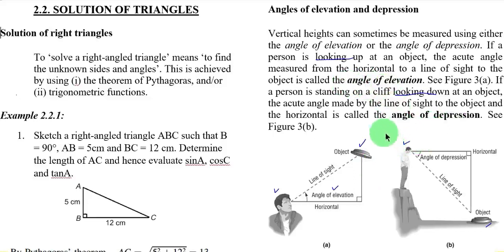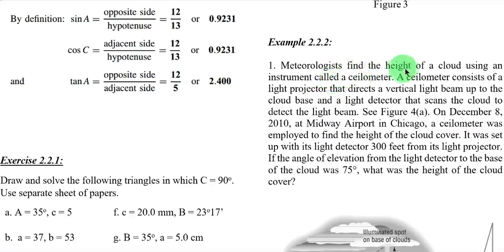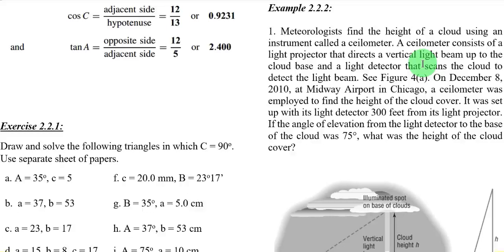Our first example: a meteorologist finds the height of a cloud using an instrument called a ceilometer. A ceilometer consists of a light projector that directs a vertical light beam up to the cloud base, and a light detector that scans the cloud to detect the light beam. On December 8, 2010, at Midway Airport in Chicago, a ceilometer was employed to find the height of the cloud cover. It was set up with its light detector 300 feet from its light projector.